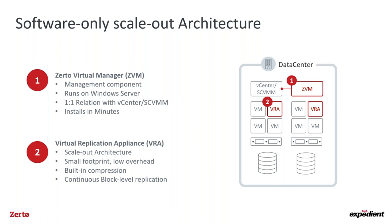You tie the ZVM to the vCenter or SCVMM in your environment and use it for orchestration. It auto-discovers all your components in your data center and you can get it up and running within minutes. The second component is the Virtual Replication Appliance — the VRA — which is the true scale-out piece. It handles all continuous block-level replication with built-in compression. It's a very small VM: one vCPU, 3 GB of memory by default — very low overhead.